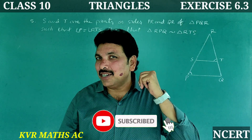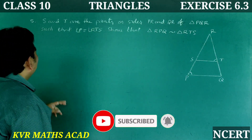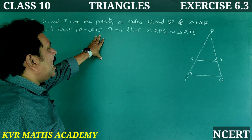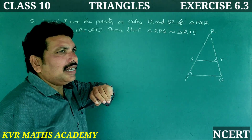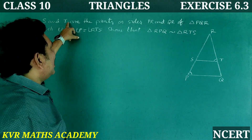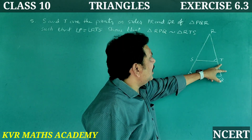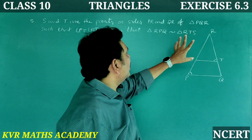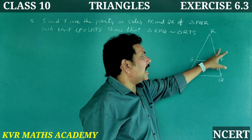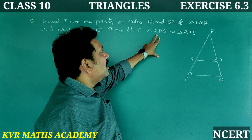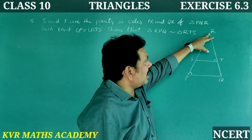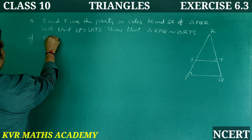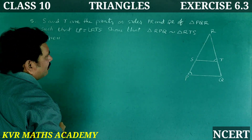Problem 5: S and T are points on sides PR and QR of triangle PQR such that angle P is equal to angle RTS. Show that triangle RPQ is similar to triangle RTS. Let us prove this.